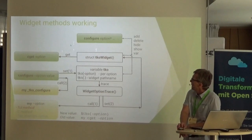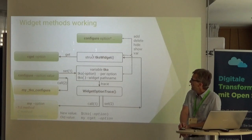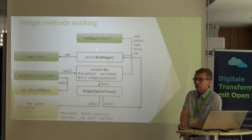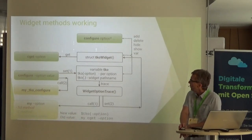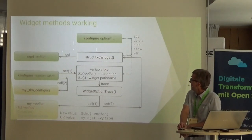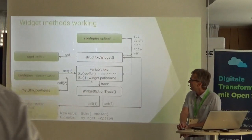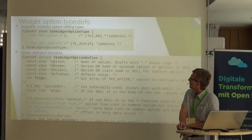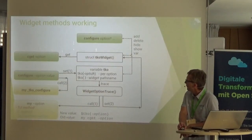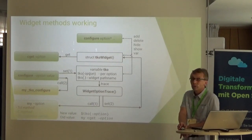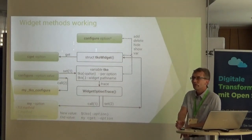When you call the CGET method with an option, it looks inside the internal C structure and returns the value. When you call the configure method, you can add, delete, and modify options, and it fills the internal structure and the array variable holding the options. You can access these variables from inside your methods.